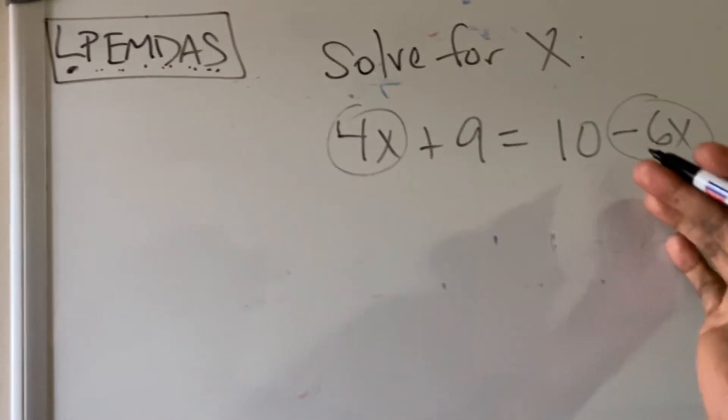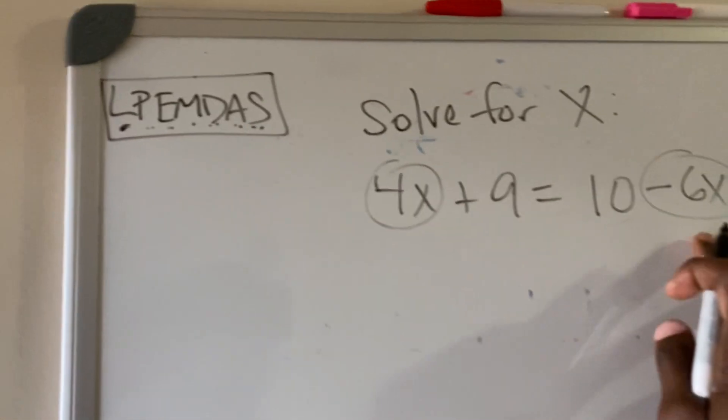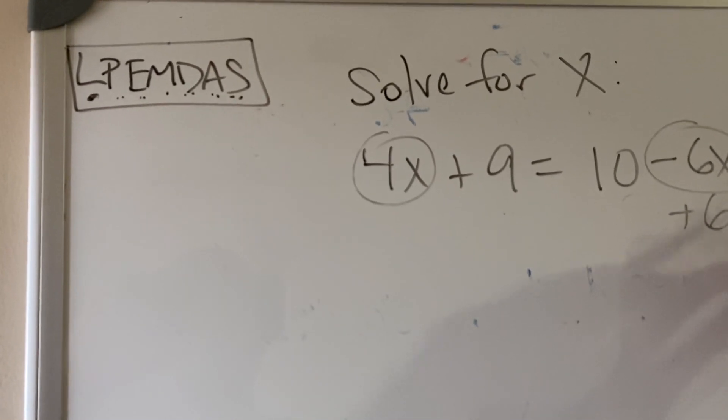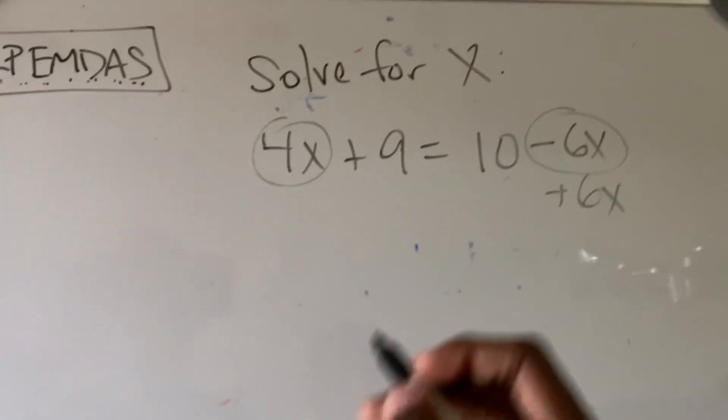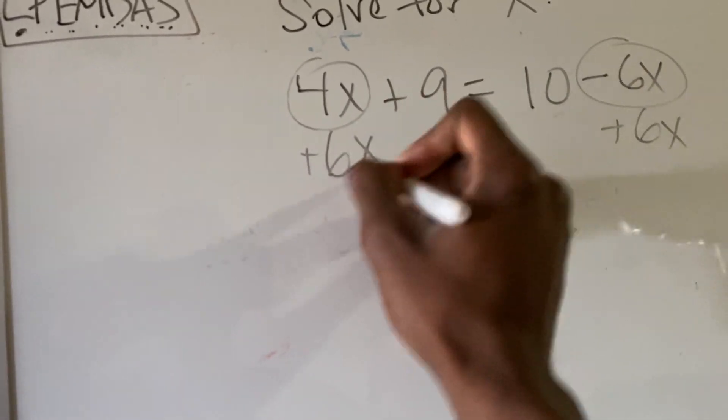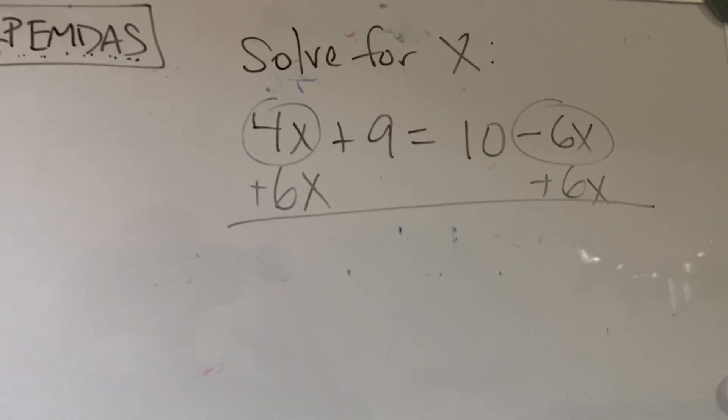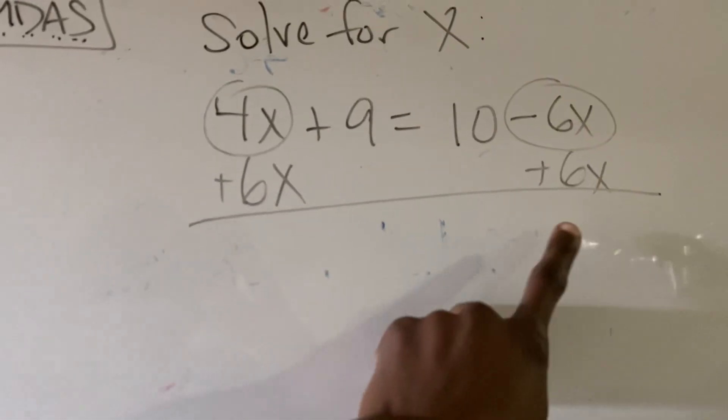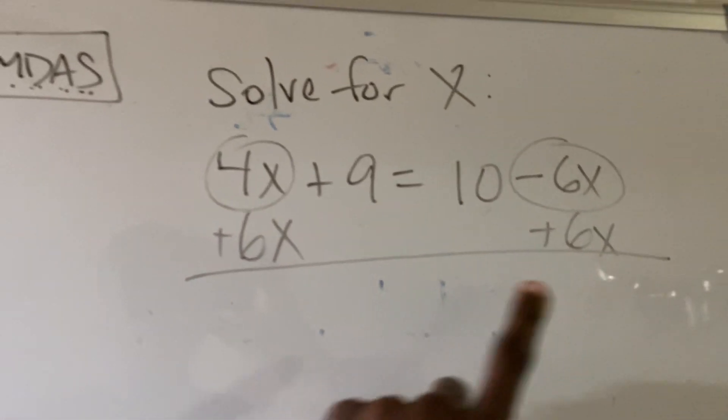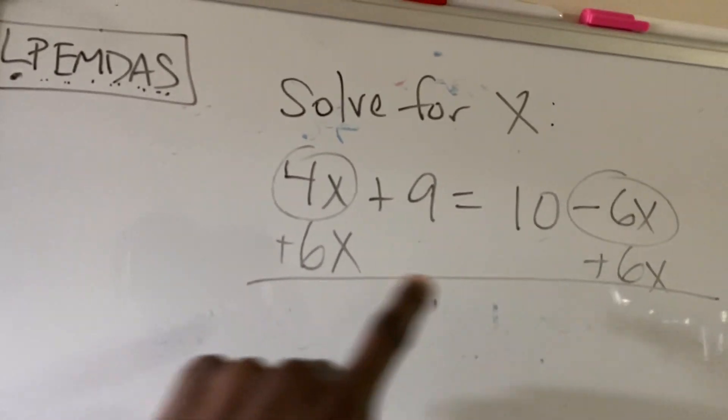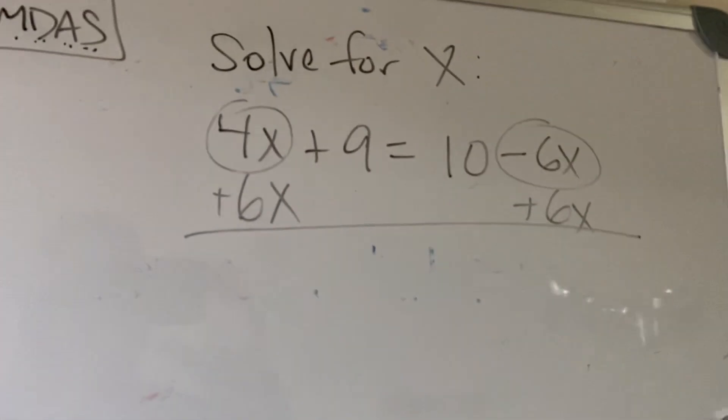So how do we do that? I have a 4x over here and a negative 6 over here. I'm just going to change the sign. I like to change the sign of the lower number most of the time, just to avoid negatives as much as possible. So we added 6x on one side underneath its like term. That's all we're dealing with, is the like terms.